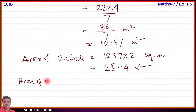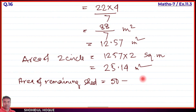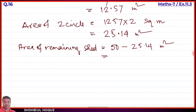Area of remaining sheet = total sheet area minus area of two circles = 50 minus 25.14 = 24.86 m². That is the answer to question number 16.